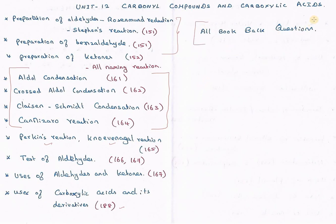Then you will cover the book back questions — all the book back questions. If you are learning organic chemistry, you will cover the product. What we have to do with the product: the method of hydrolysis, heat, and what the main product is.